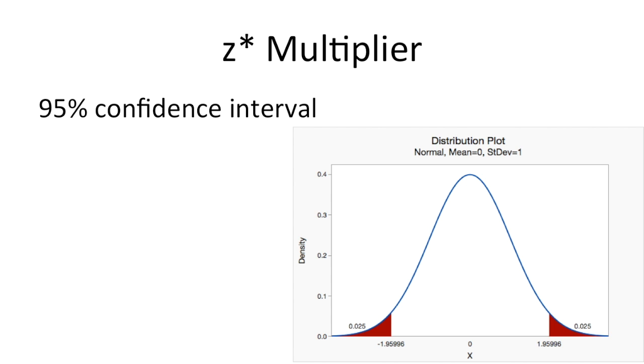Using Minitab Express, I constructed a distribution plot and found that these z scores are plus and minus 1.95996. We'll round to 1.960.